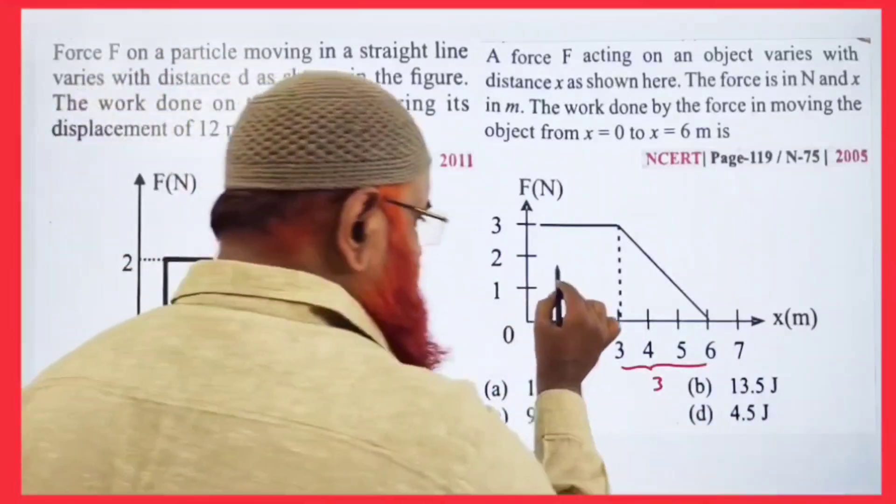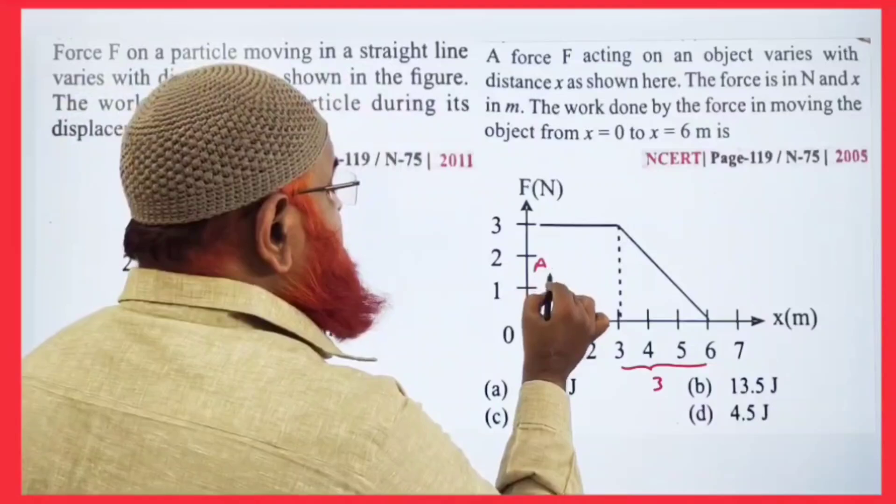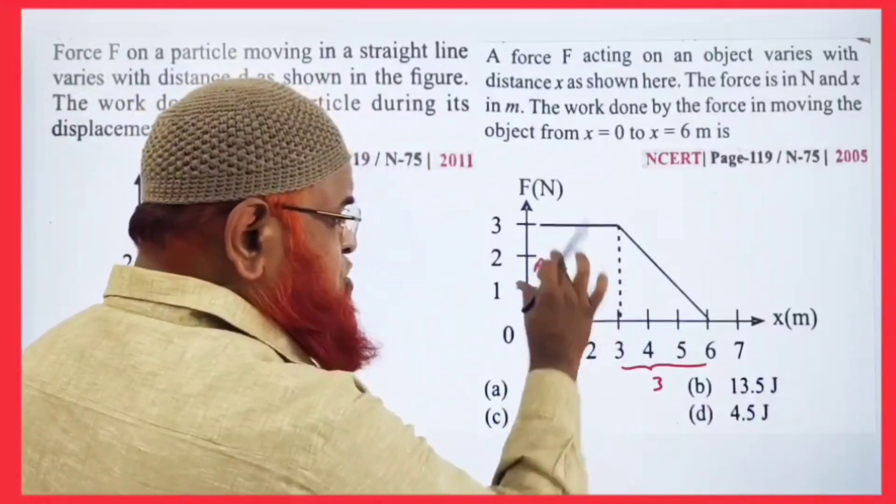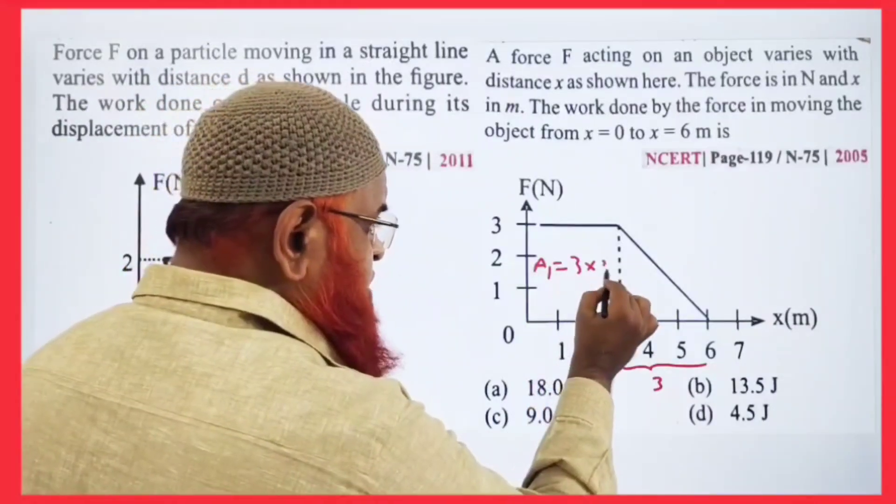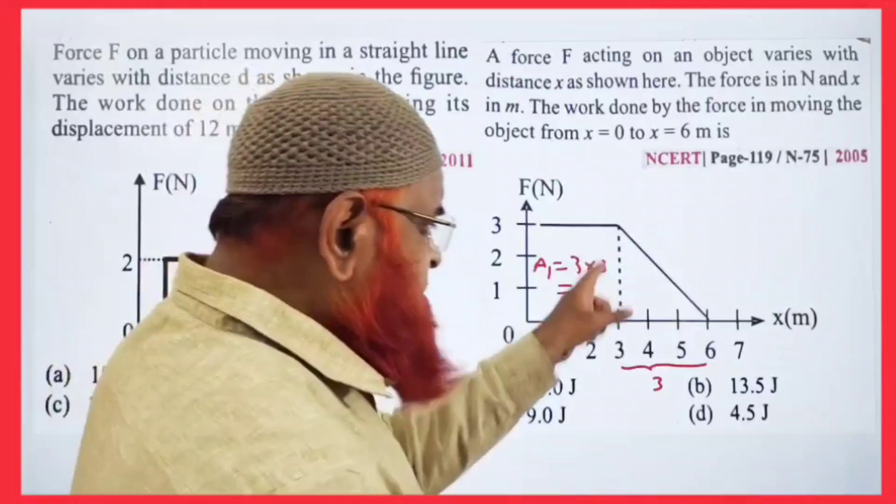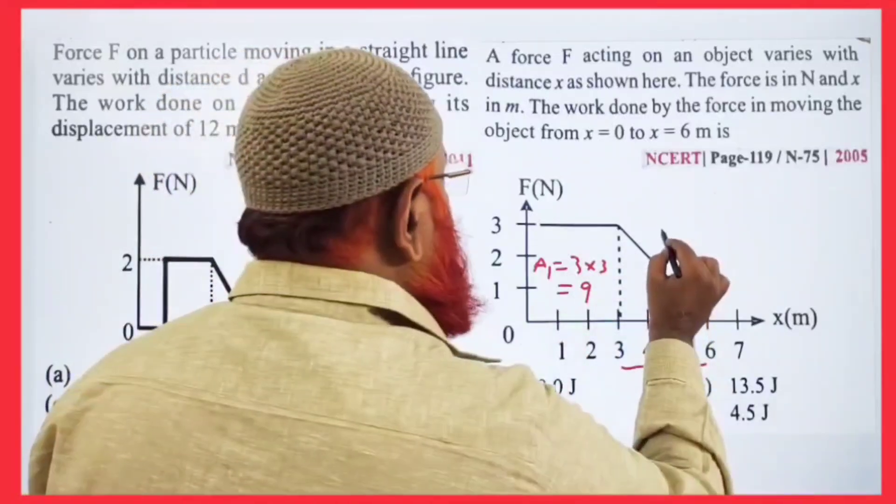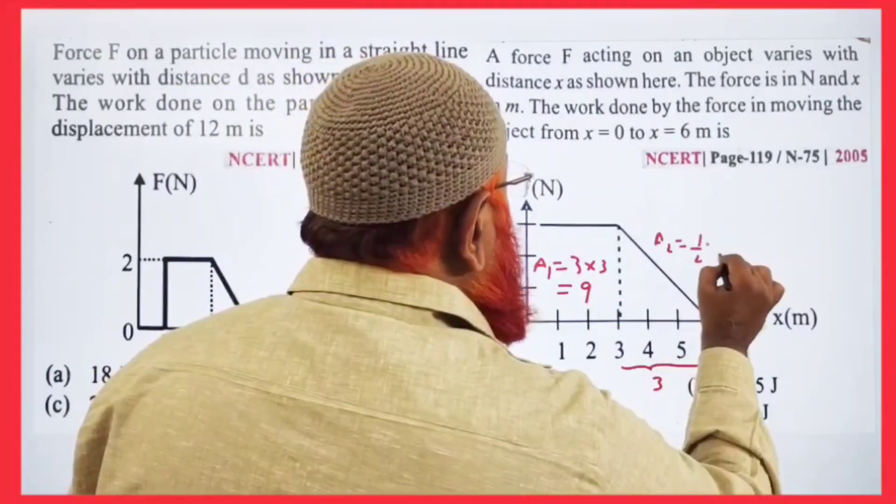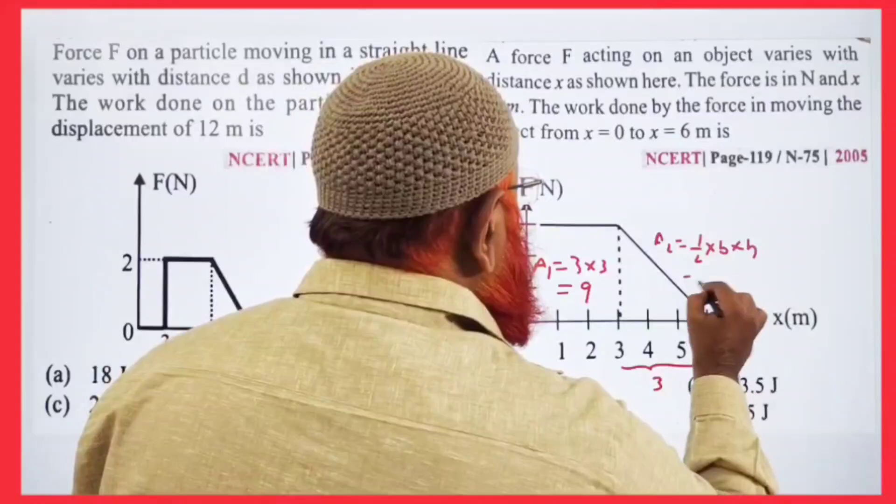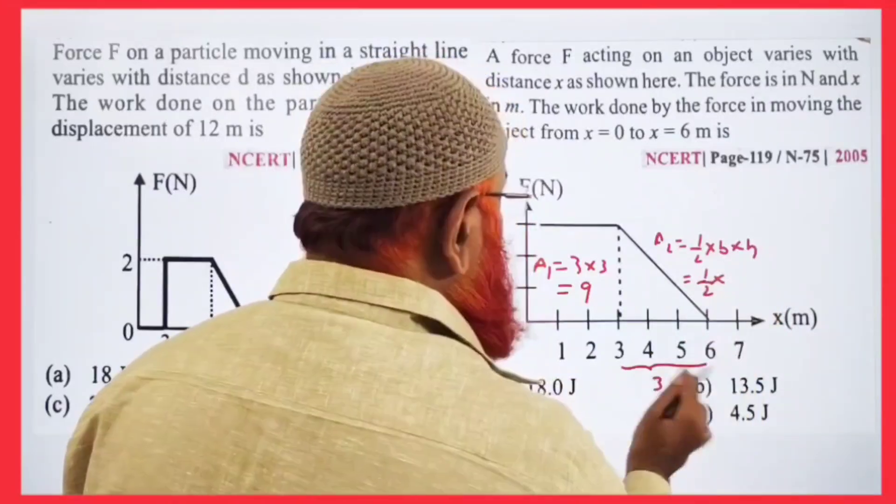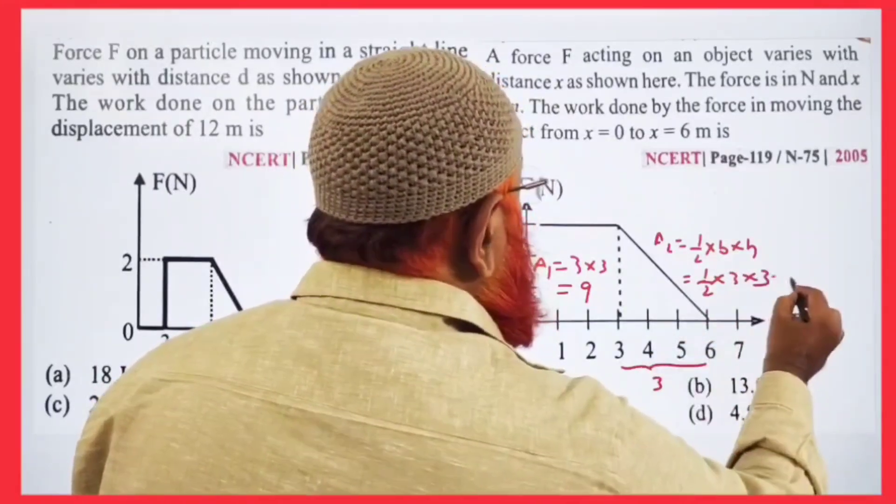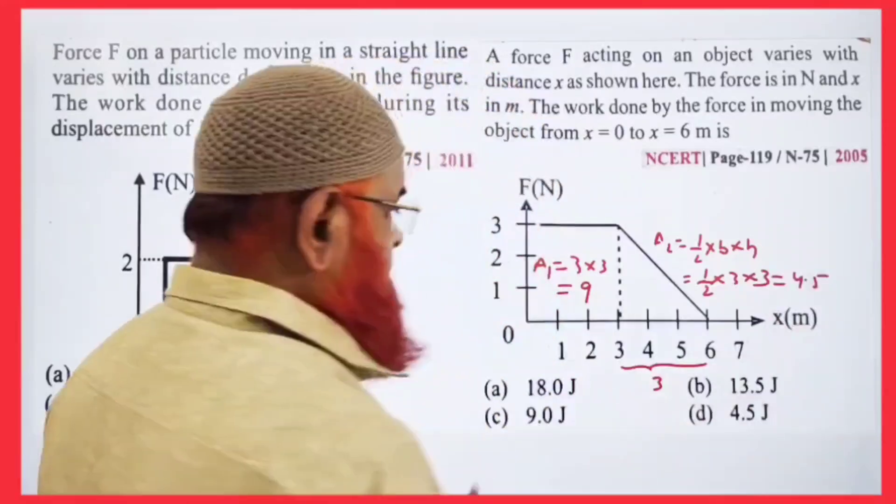So first area, if you want to find out area a1 which is rectangle, length into breadth, that means 3 into 3 is going to be 9 here. So remaining part is a triangle which is taken as area a2, which is half into base into height, half into base is 3 into height is 3 again.